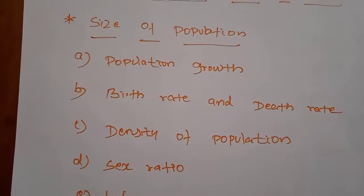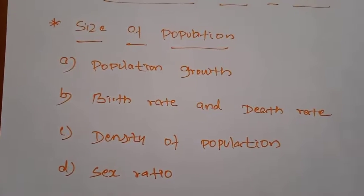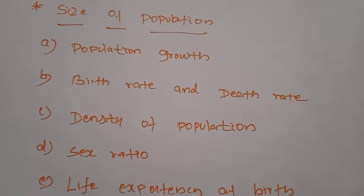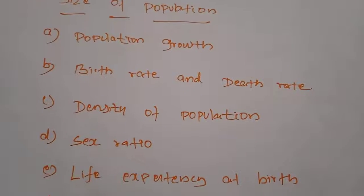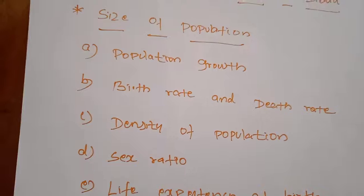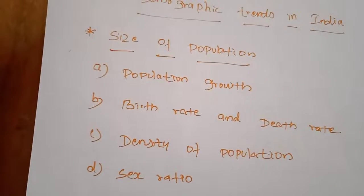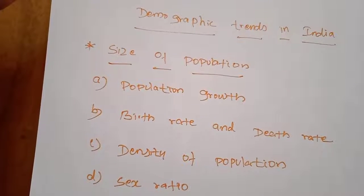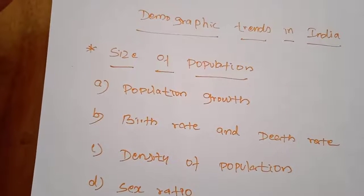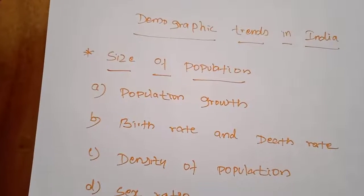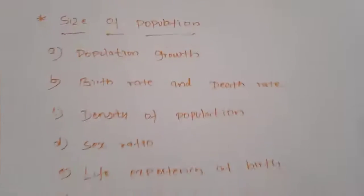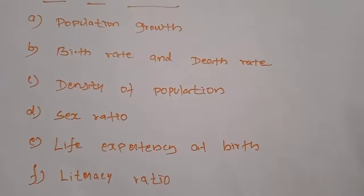The population growth, based on the effort of the state government, can be brought under control. The density of population refers to the average number of persons residing per square kilometer. It represents the man-land ratio. As the total land area remains the same, an increase in population causes the density of population to rise, and our natural resources are utilized on the basis of increasing population.